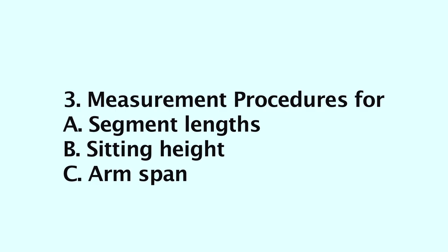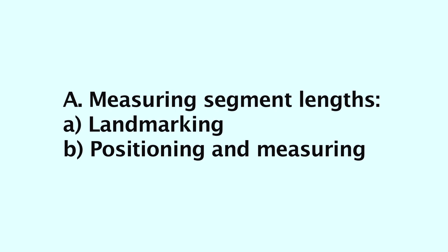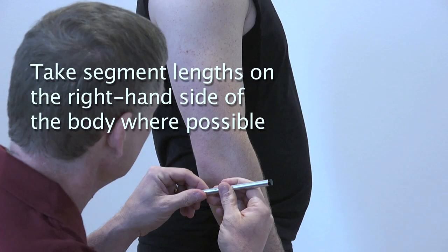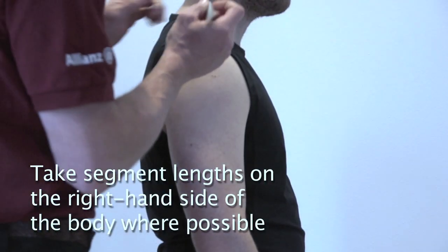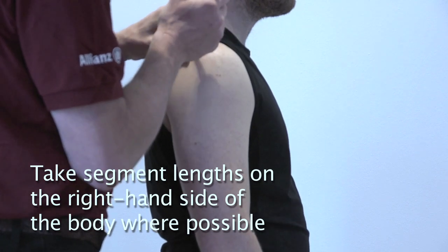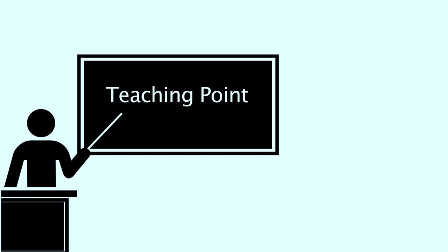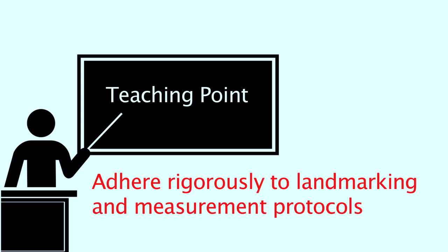Section 3: Measurement procedures for segment length, sitting height, and arm span. Section A. To measure segment length correctly, two steps are required: firstly, landmarking the end points of each segment, and secondly, positioning the athlete and taking the measurement. All segment lengths should be taken on the right-hand side of the body unless there are marked anatomical anomalies such as an amputated right upper limb. Teaching point: small errors in landmarking or measuring technique can make a large difference in the maximum allowable standing height, so it is imperative that these protocols are adhered to rigorously.